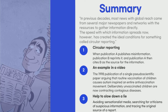Second, an example in the video: the 1998 publication of a single pseudoscientific paper arguing that routine vaccination of children causes autism inspired an entire anti-vaccination movement, and deliberately unvaccinated children are now contracting contagious diseases. Lastly, they said avoiding sensationalized media, searching for criticisms of suspicious information, and tracing the original source of a report can help to slow down a lie.